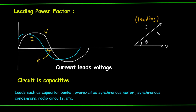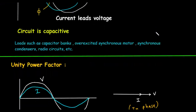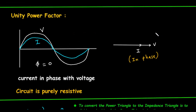Finally, there is the unity power factor. This is the ideal scenario that occurs when the voltage and current are perfectly in phase. The phase angle, Φ, is equal to zero. This happens in a circuit that is purely resistive. In this case, the phasor diagram shows both the voltage vector, V, and the current vector, I, pointing in the same direction, indicating there is no phase difference between them.